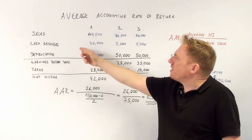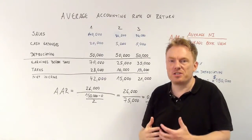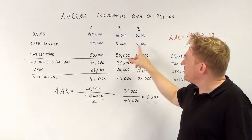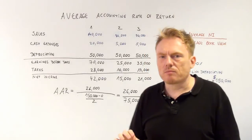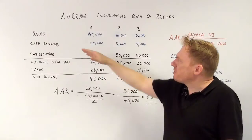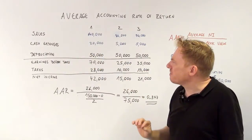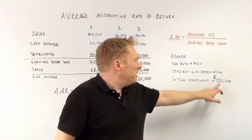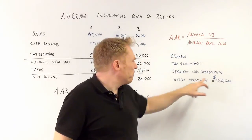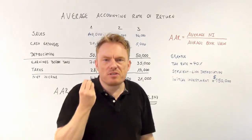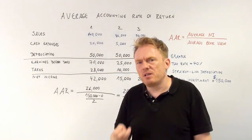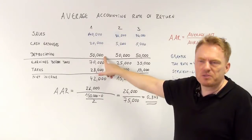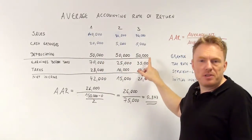As a consequence, there are also cash expenses caused by this machine or by the additional sales: $20,000 in the first year, $5,000 in the second, and $5,000 in the third year. Which means we need to subtract the cash expenses from sales. We also need to look at depreciation expenses. With an initial investment of $150,000 and straight-line depreciation, depreciation equals $150,000 divided by 3, equal to $50,000 each year — $50,000 in the first, second, and third year.